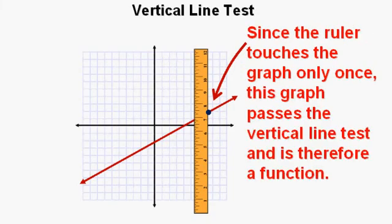Since the ruler edge touches the graph at most only once, this graph passes the vertical line test and is, therefore, a function.